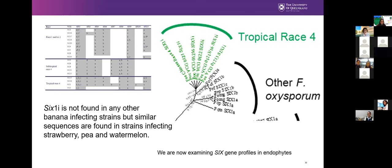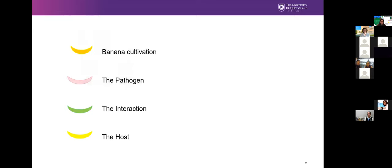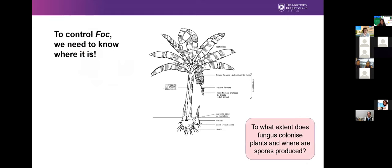In summary on SIX genes: SIX1i is not found in any other banana-infecting strains but similar sequences appear in strawberry, pea, and watermelon strains. This work has now been developed into a molecular diagnostic tool by Lilia Carvelas to distinguish between different races based on SIX gene profiles. I'll now move on to discuss genetic resistance to Fusarium wilt and also skip quickly through some epidemiology.